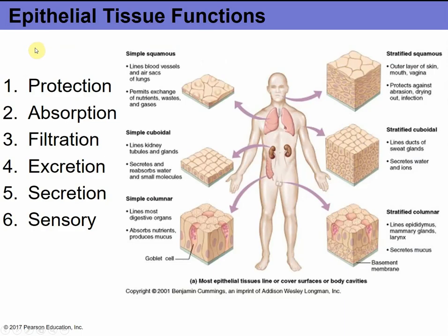There are six primary functions of epithelial tissue. Protection — it protects internal structures from the outside environment. Absorption — in the intestines we absorb nutrients through epithelial tissue. Filtration — in the kidneys we filter blood and remove waste products. Excretion. Secretion — through glandular epithelial like sweat glands. And sensory function — sensory touch receptors are found in epithelial tissues like the skin.